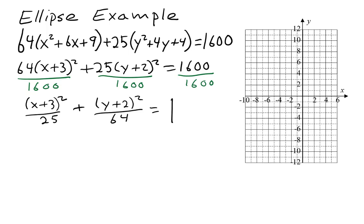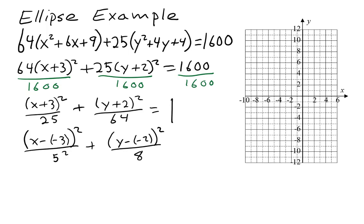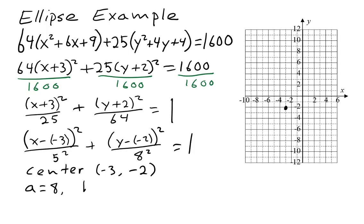There's only a little left to put it completely in standard form. Wherever we have addition, we write it as subtraction of a negative: x minus negative 3, and y minus negative 2. The denominators are written as squares: 25 is 5 squared and 64 is 8 squared. Now we have an ellipse with center at negative 3, negative 2. A is the larger of those two numbers squared in the denominator, so it's 8; B is 5. Since 8 squared is under the y term, the major axis is vertical.